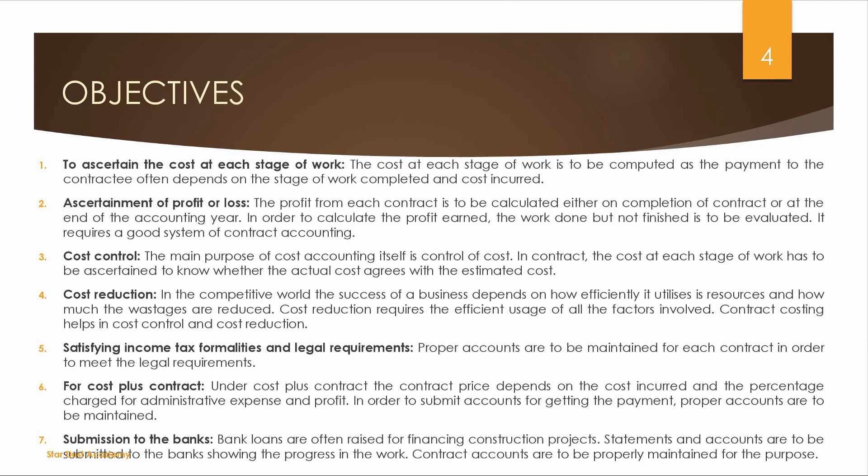Next is ascertainment of profit or loss — we determine the profit or loss on each contract. Next is Cost Control. At each stage, we have an estimated cost, and we compare it with the actual cost. By checking the actual cost against the estimate, we exercise effective cost control.